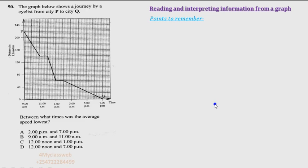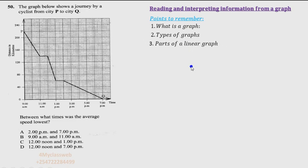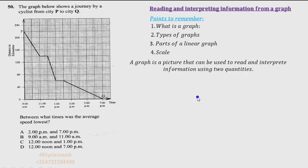I'm assuming this question was being discussed in one of the previous classes. The first thing I want us to remind ourselves is: what is a graph? We are also going to discuss the types of graphs, parts of a linear graph, and the scale. These four areas are very important whenever you are reading and interpreting information from a graph. A graph is a picture that can be used to read and interpret information using two quantities.